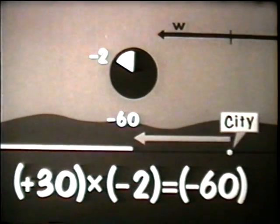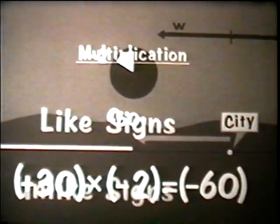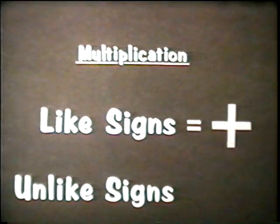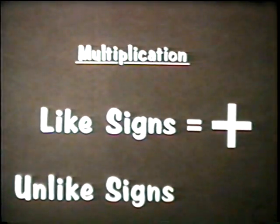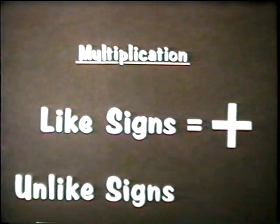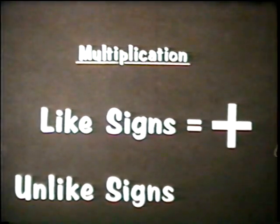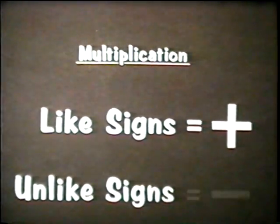So now we can state the general rules for multiplying two signed numbers: when two numbers with like signs are multiplied, the product is positive. When two numbers with unlike signs are multiplied, the product is negative.